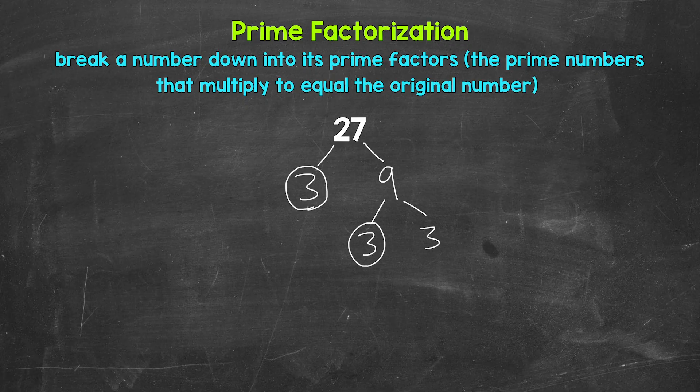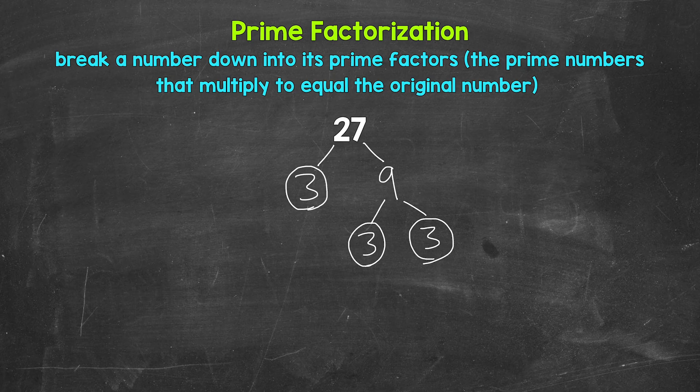Three is prime. So let's circle these. And we are done. That's the prime factorization of 27.